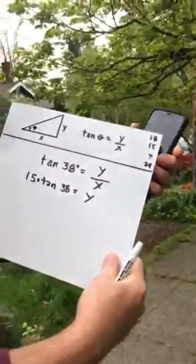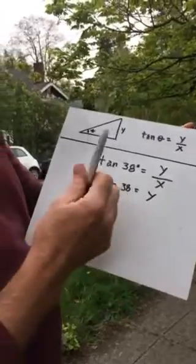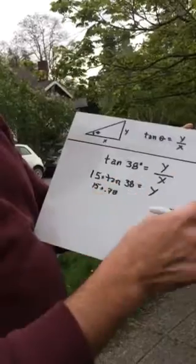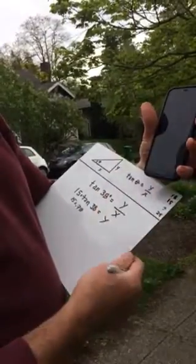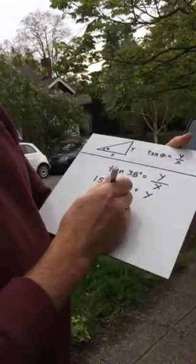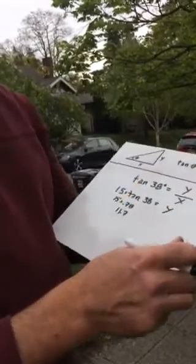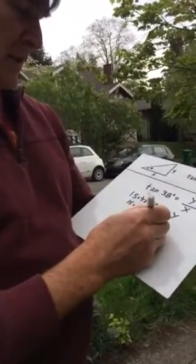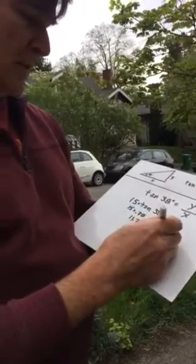So 0.78 — put that in my calculation: 15 times 0.78. That comes out to be 11.7. And I remember that I'm standing six feet off the ground roughly — I was holding it about here. So plus six is 17.7.